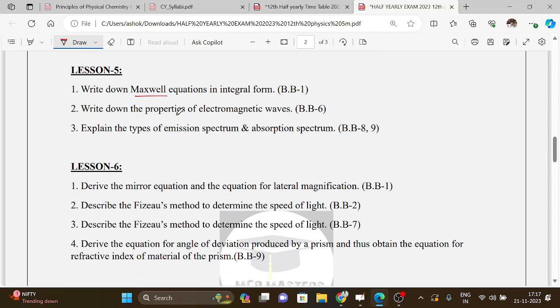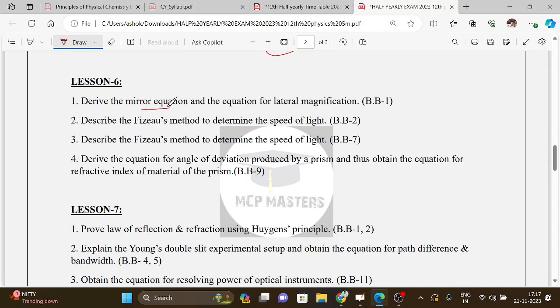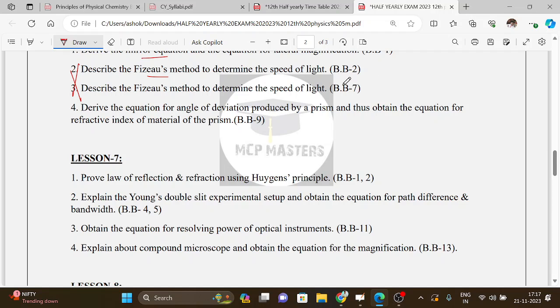Lesson 5: Maxwell equations, properties of electromagnetic waves, emission spectrum and absorption spectrum. Lesson 6: mirror equation, Vizuos method. If you have a mistake in the PDF, I will check it. Actually, the 7th question in the book back is the lens maker formula. So Lesson 6 third question - the book back is correct, that is the lens maker formula.